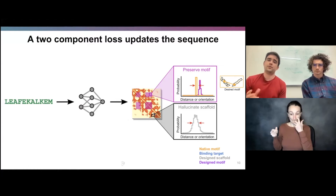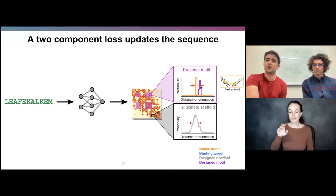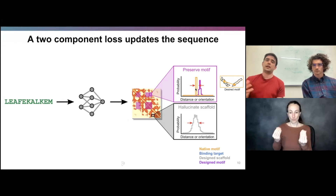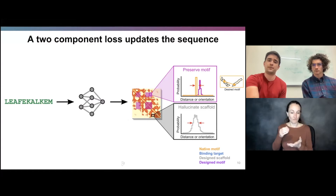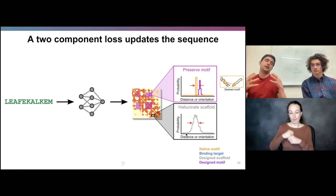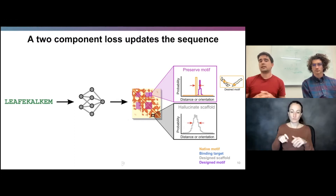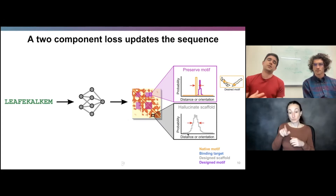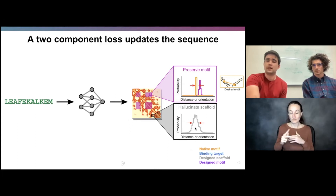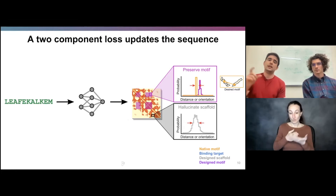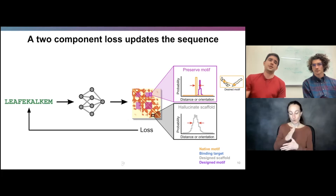For the region inside the motif, we measure the cross entropy between the predicted distribution and the ground truth one-hot distribution from the ground truth structure. For all other IJ positions, we want to encourage the network to make a protein-like structure without hard-coding the exact structure it should adopt. We do this by asking the network to be as certain as it can about the protein geometry — mathematically, that means minimizing the entropy of the predicted distribution. These two components — recapitulating the motif geometry and making a well-structured protein — make up the two primary components of the loss function used to update the sequence.